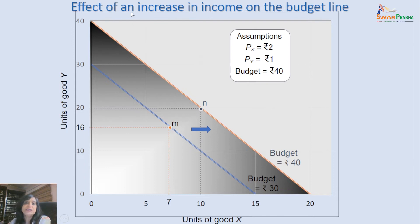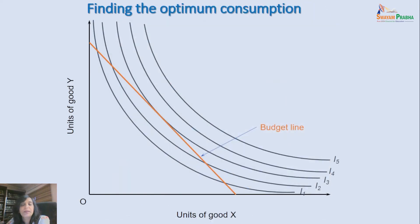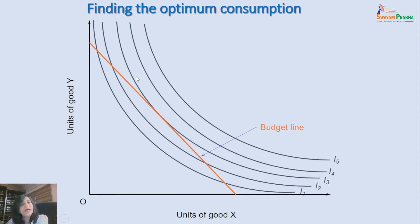So, an increase in income leads to a rightward shift in the budget line, and vice versa — a decrease in income shifts it inside. That is the effect of a change in income on the budget line. Coming to our second objective, finding the optimum consumption point for the consumer — that is, determining what the consumer should buy. For that, we will take the help of the indifference map.